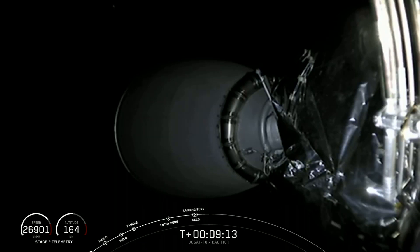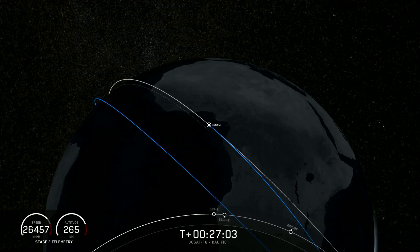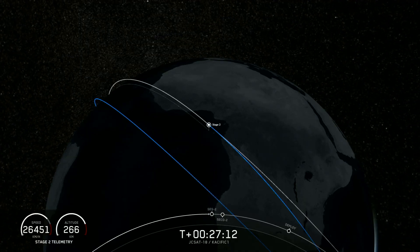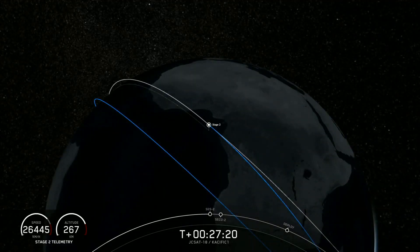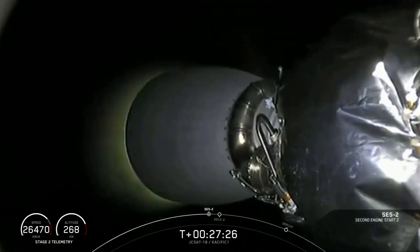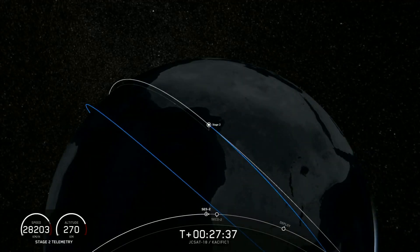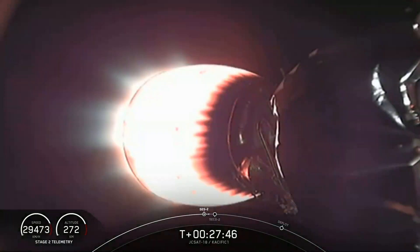MVAC engine chill has begun on the Merlin vacuum engine. In about 30 seconds we'll see the second relight of MVAC. There on your screen we can see MVAC as it has reignited. A little difficulty maintaining the video stream - it's hard to get video from space. We'll bring that back as we can provide it. We're waiting for confirmation of good orbit.